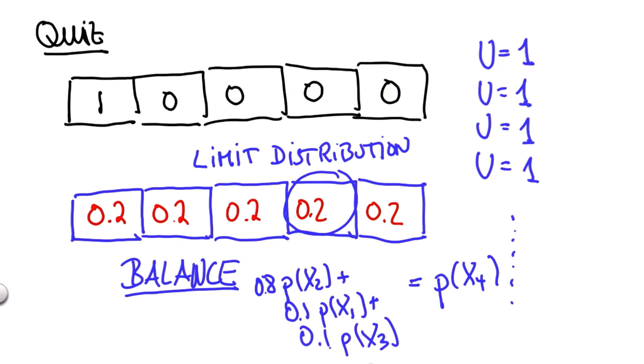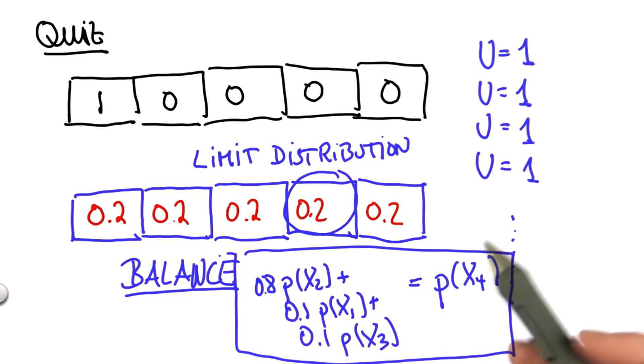Those together must hold true in the limit when things don't move anymore. Now, you might think there's many different ways to solve this and the 0.2 is just one solution, but it turns out 0.2 is the only solution.